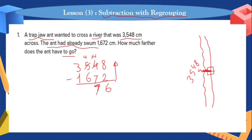Next step: 4 minus 6. Is 4 greater than 6? No. Borrow 1 from 3. 3 becomes 2 and 4 becomes 14. So 14 minus 6 equals 8. And 2 minus 1 equals 1. So the ant needs to move 1,876 more to cross the river.